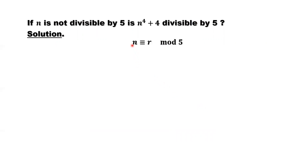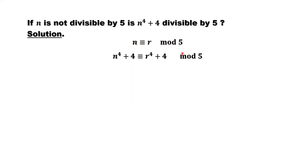We consider N divided by 5, the remainder is little r. This is a number theory notation. This sign means congruent, means equivalent. If both sides are divided by 5, they have the same remainder. This means modulo 5. The meaning is the two numbers on both sides of this congruent sign are equivalent — they have the same remainder if N divided by 5, r divided by 5. This implies this result, which is important for our discussion.